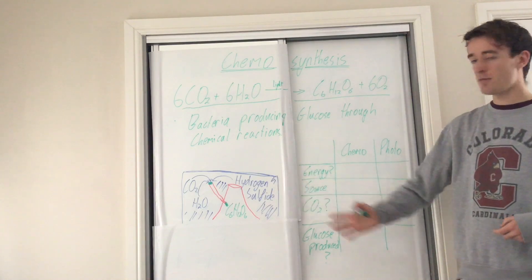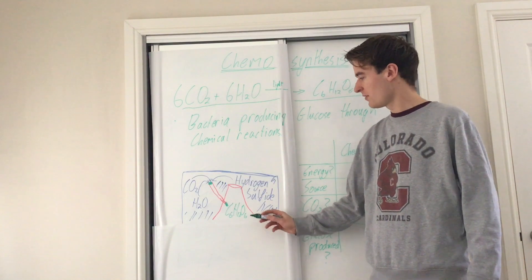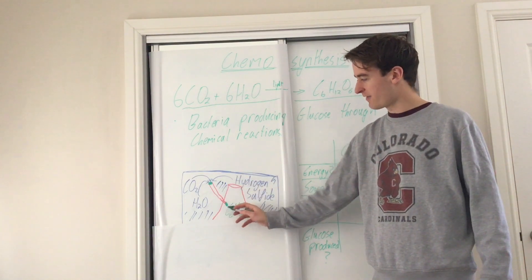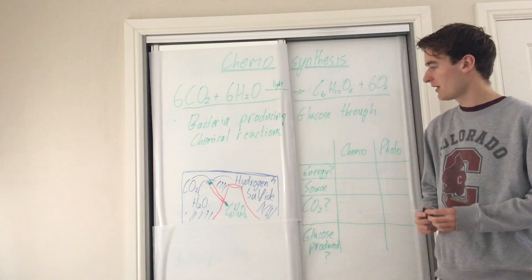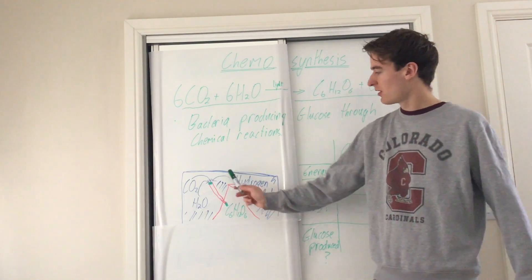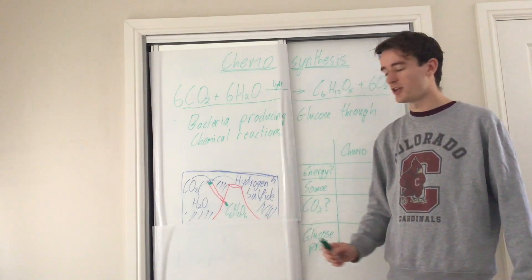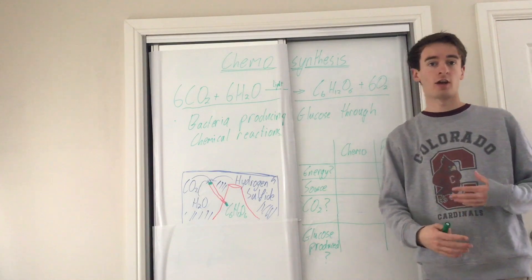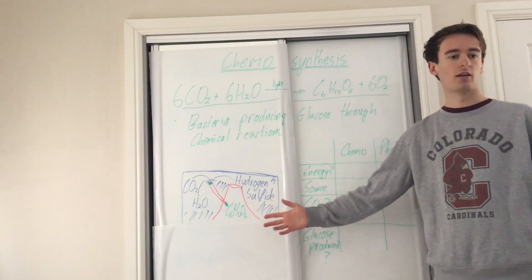So an example of where there might be no light is at the seabed. I've drawn here a diagram showing a deep sea vent with this tube worm out the side. Now, the tube worm contains bacteria which absorb hydrogen sulfide, CO2 and water and undergo a string of chemical reactions and use this to make glucose.